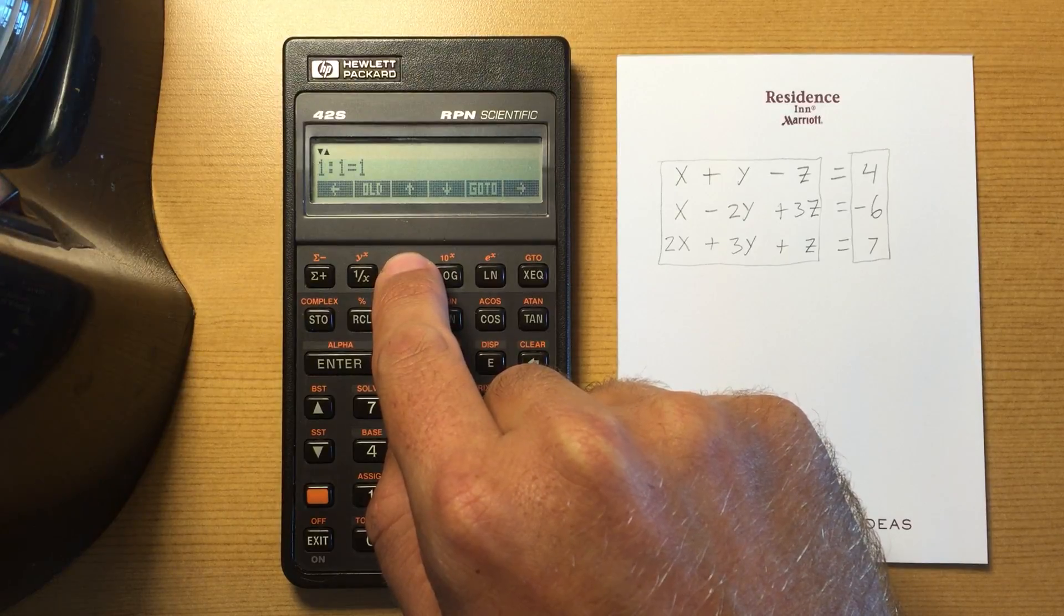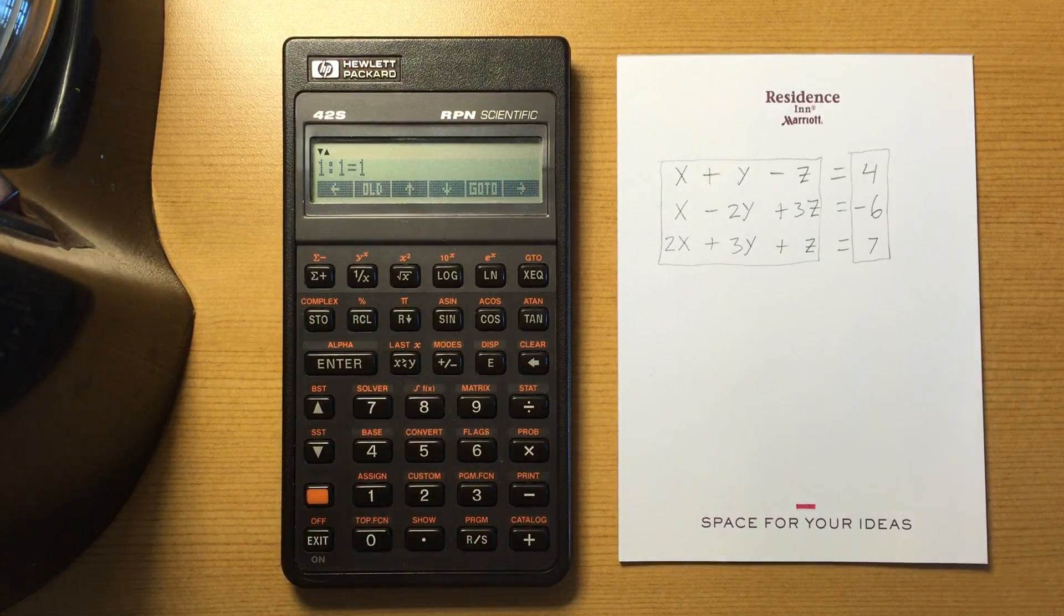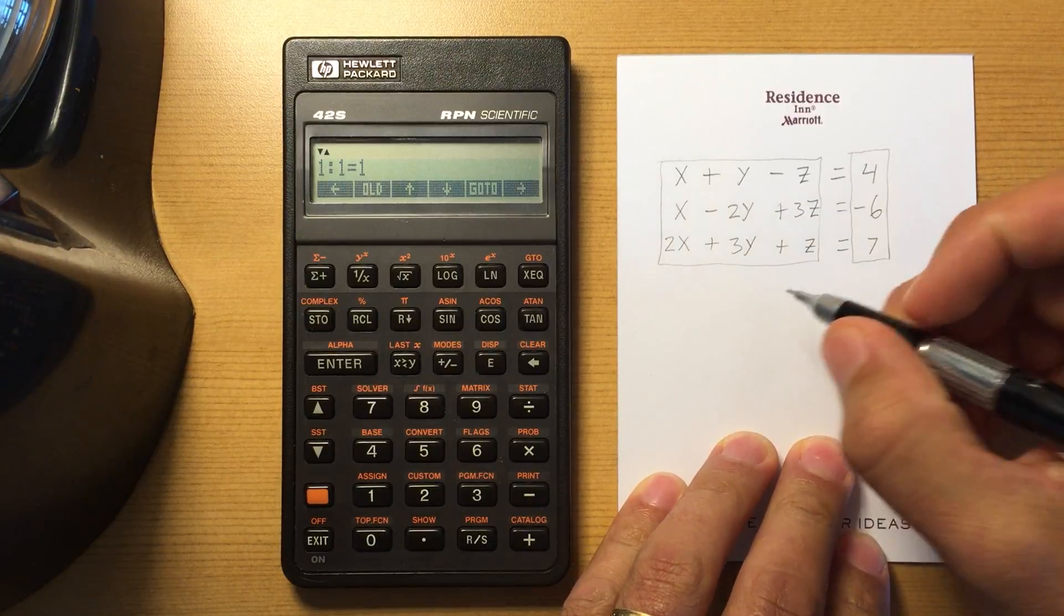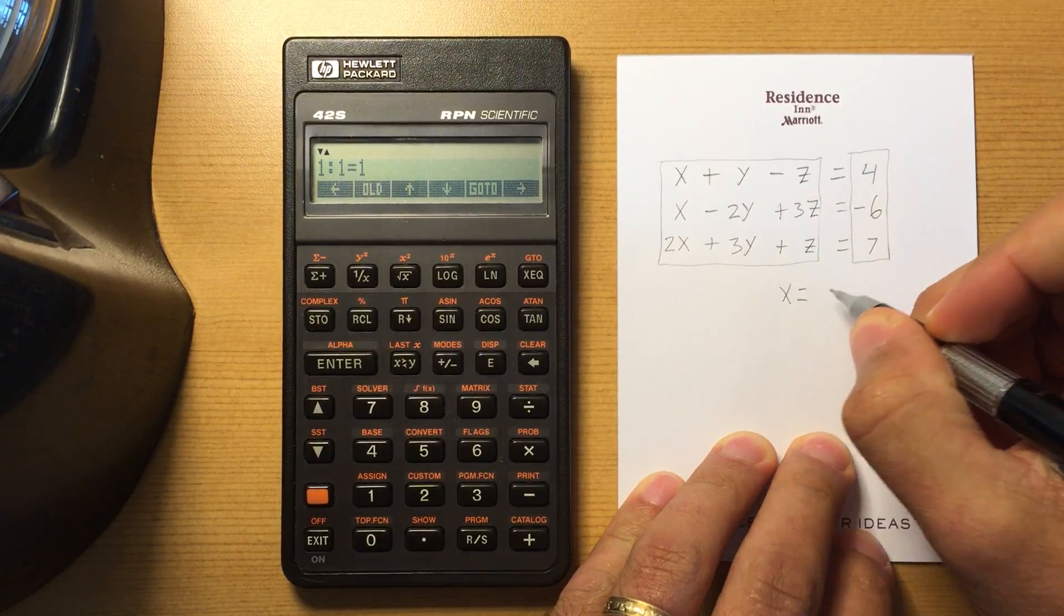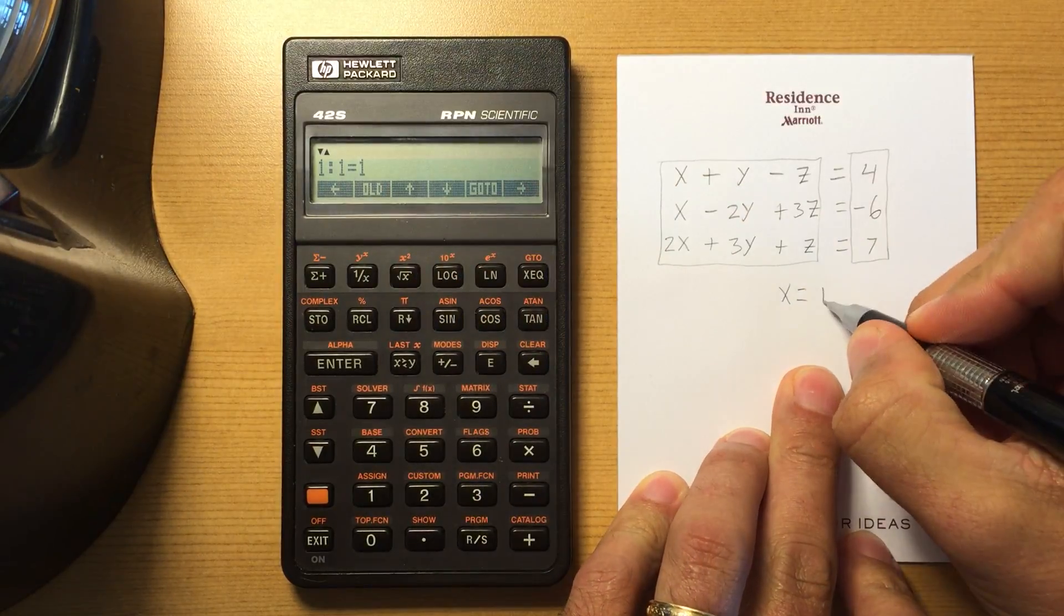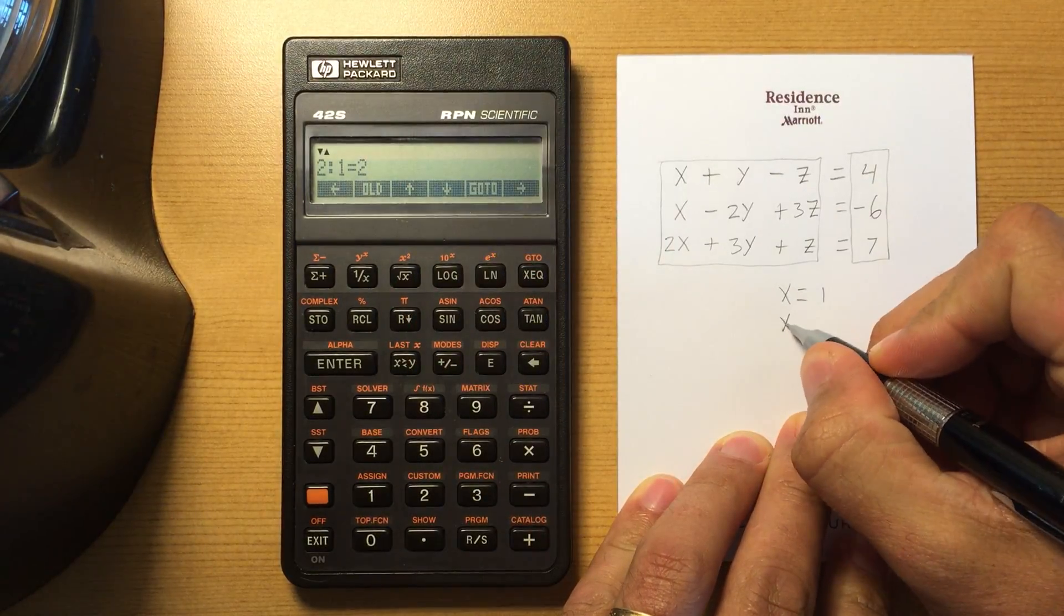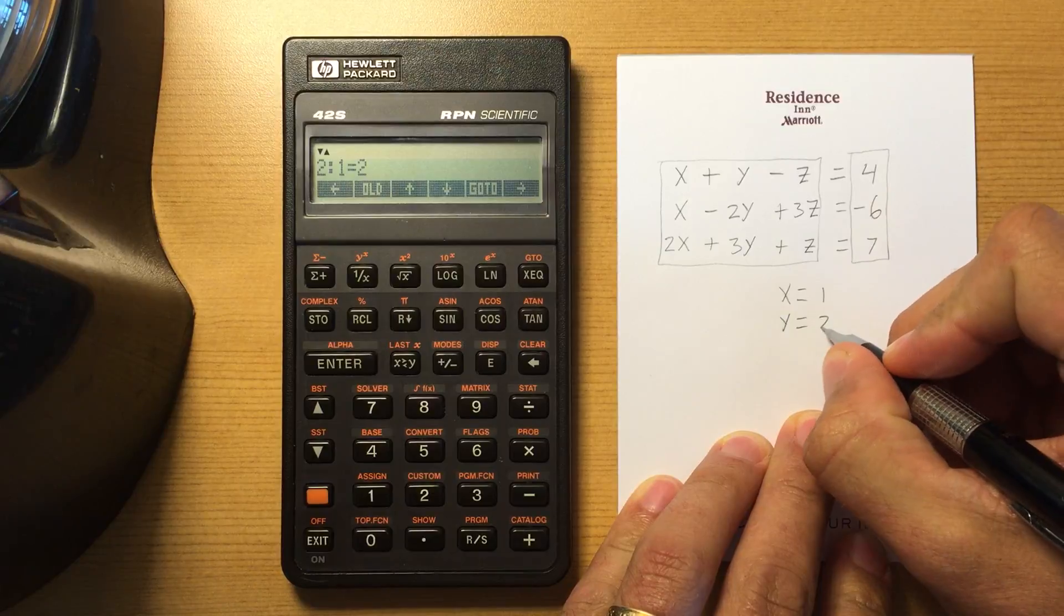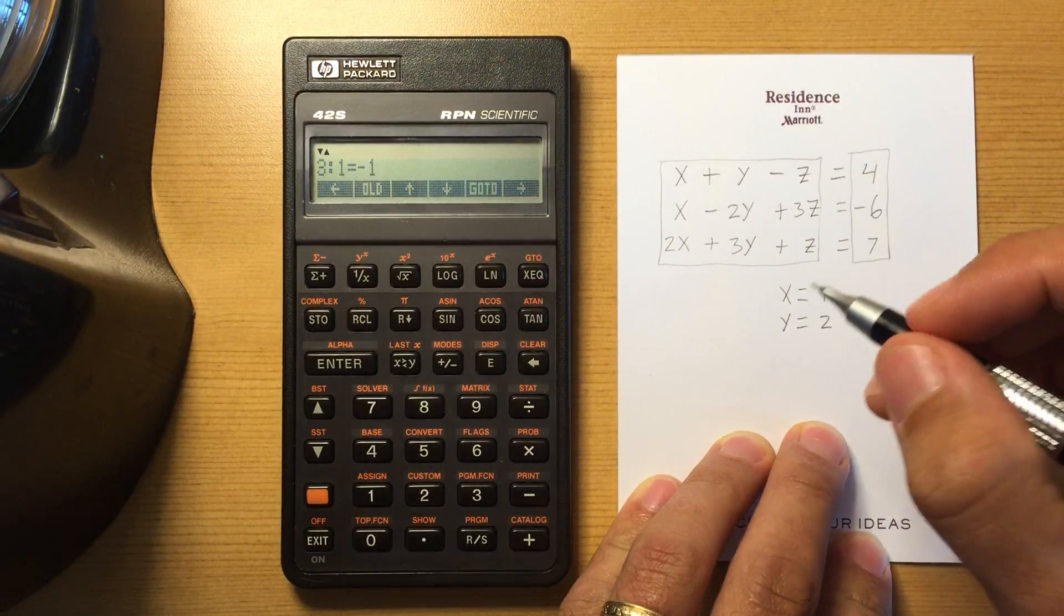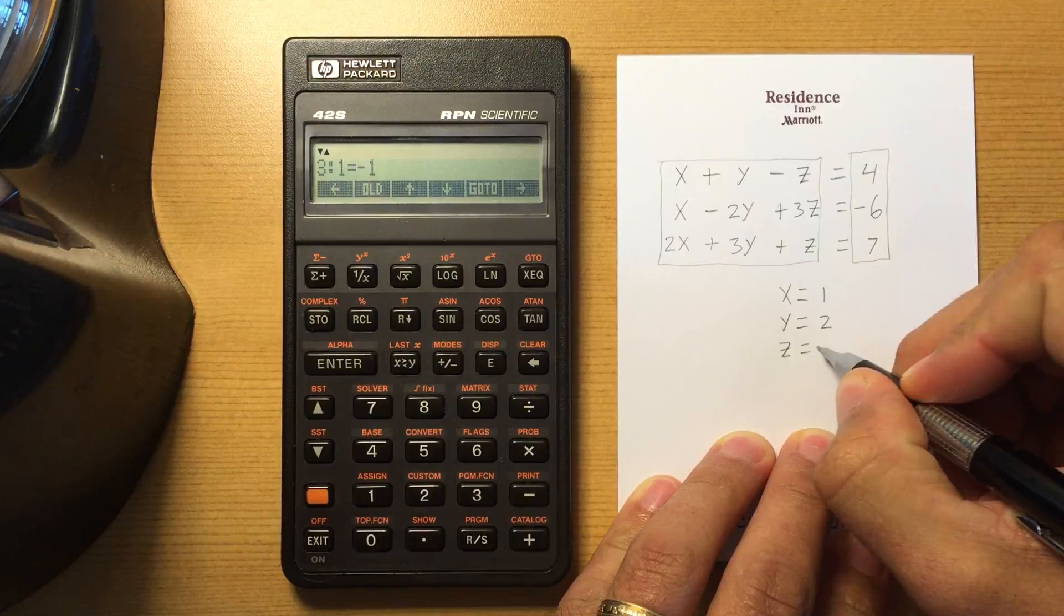Now it does the calculation. So it says that our X is equal to 1, our Y is equal to 2, and our Z is equal to negative 1.